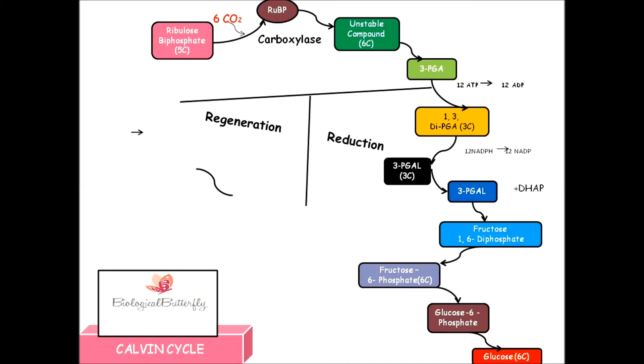As you can see, glucose is formed. Here, our reduction phase is complete. We just completed the carboxylation phase and the reduction phase. Now we are going to see the regeneration phase—regeneration of RUBP so that the cycle continues and glucose molecules keep on generating.